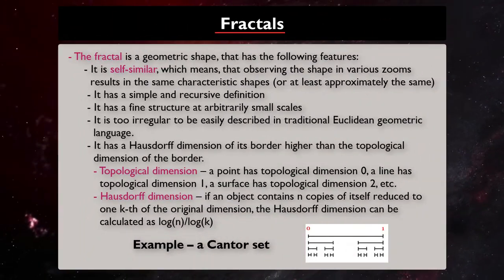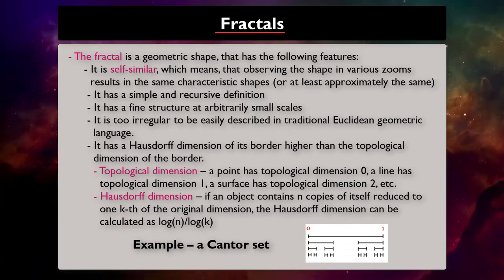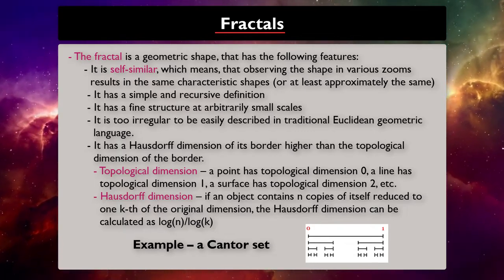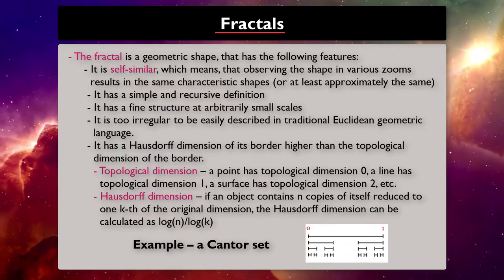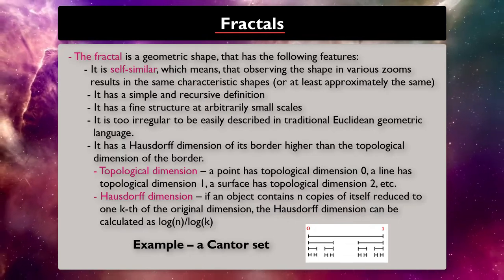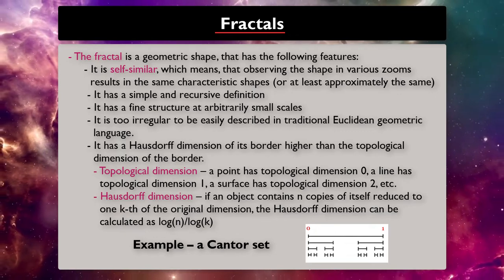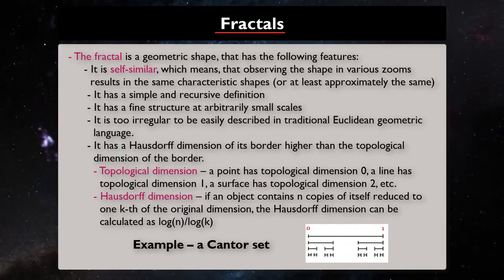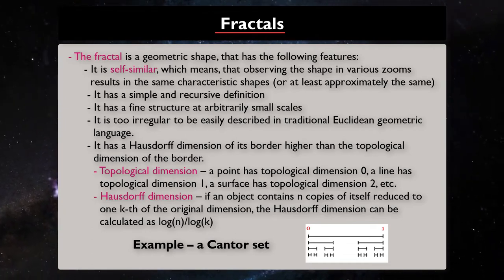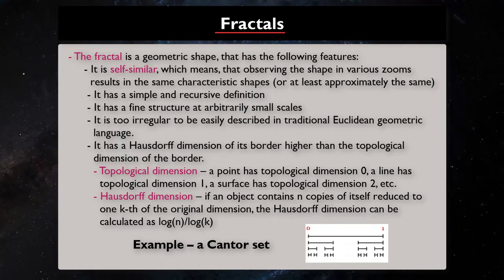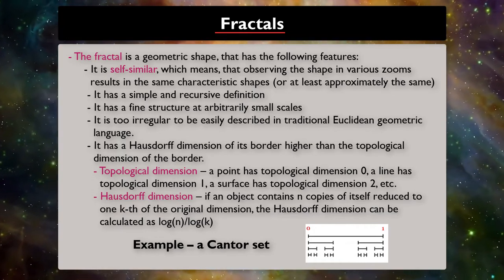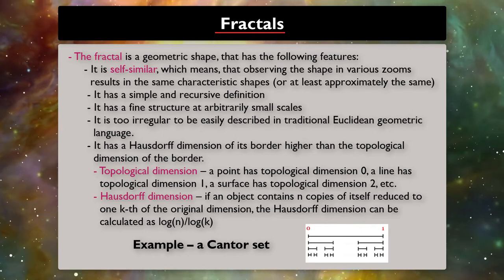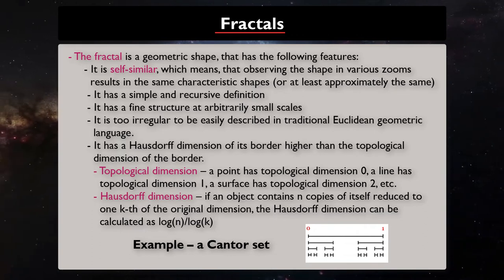For those wondering what a fractal is: a fractal is a non-regular geometric shape that has the same degree of non-regularity on all scales. Fractals can be thought of as never-ending patterns. They have a Hausdorff dimension of their border higher than the topological dimension of the border. An example is the Cantor set, where the original line is divided into three parts and the middle part is erased. The same procedure is applied to the newly created lines. Repeating this procedure to infinity, we obtain an infinite number of points with topological dimension 0. The set contains two copies of itself reduced to 1/3 of the original dimension, so the Hausdorff dimension is log(2)/log(3), which is greater than 0.